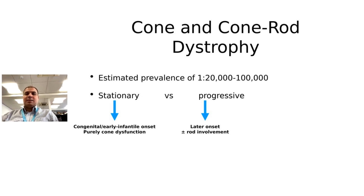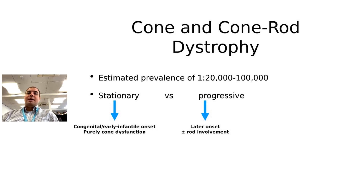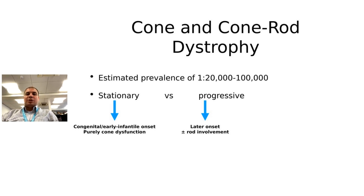Typically, stationary diseases are congenital with an early infantile onset, and they may only affect one of these systems. When we think of progressive diseases, we're usually talking about a later onset and they may have broader involvement. This will change as I show in the next slide.